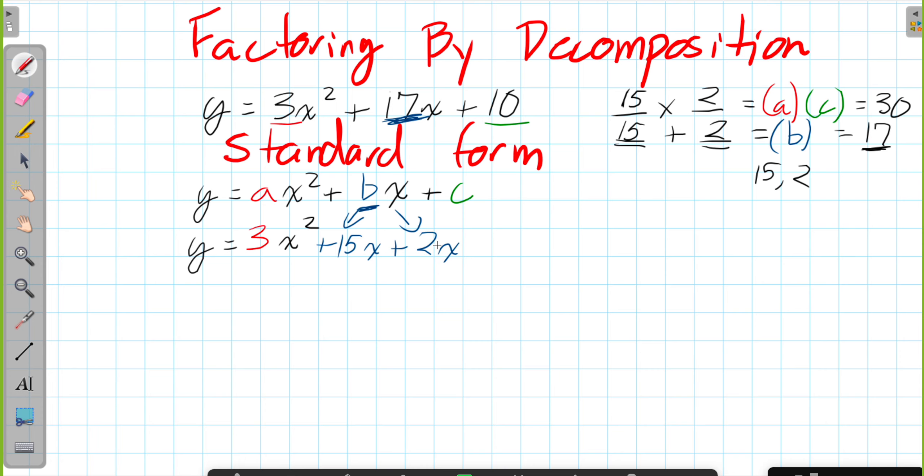So 15X plus 2X is actually equal to 17. But instead of representing it as a simplified number, we've decomposed it into two numbers. And this allows us to set up a scenario where we're factoring or common factoring by groups.